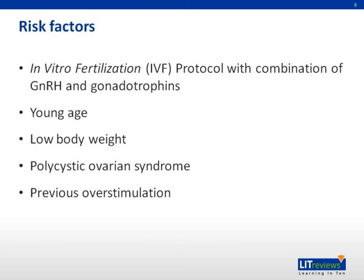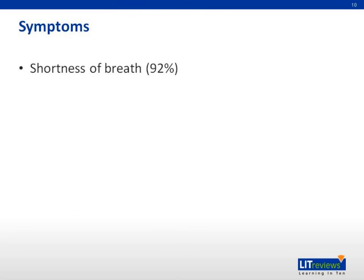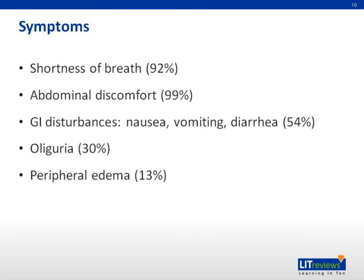In addition, an increased number of small and medium-sized follicles and elevated estradiol levels around the assumed time of ovulation increase the incidence. OHSS should be suspected when recent stimulation treatment has been initiated, most likely 3 to 7 days after administration of beta-HCG. 92% of patients present with shortness of breath, 99% with abdominal discomfort, 54% with gastrointestinal disturbances such as nausea, vomiting, and diarrhea, 30% with oliguria, and 13% with peripheral edema.